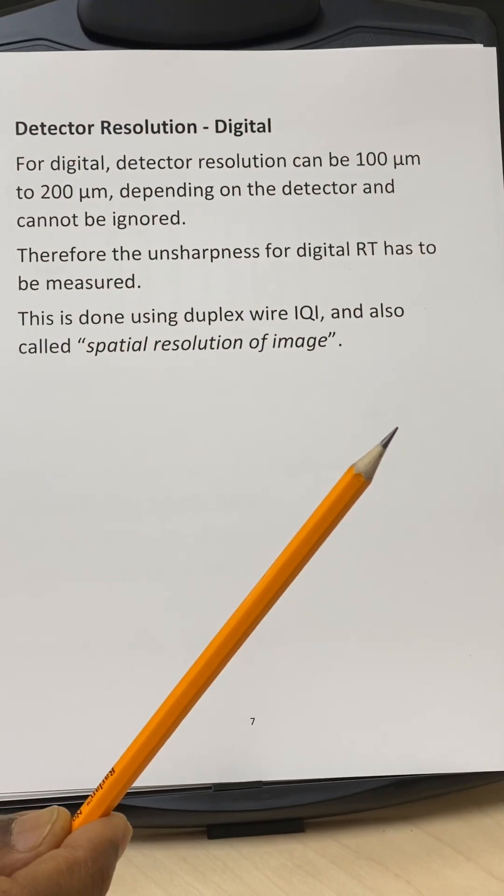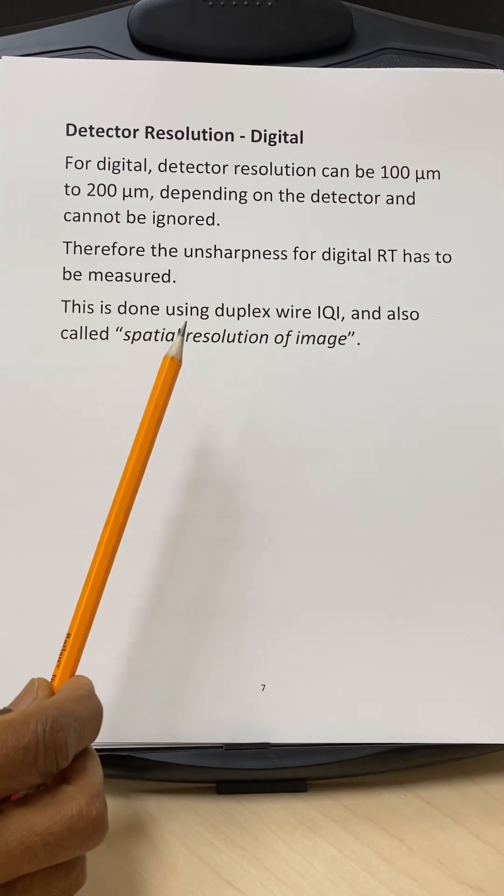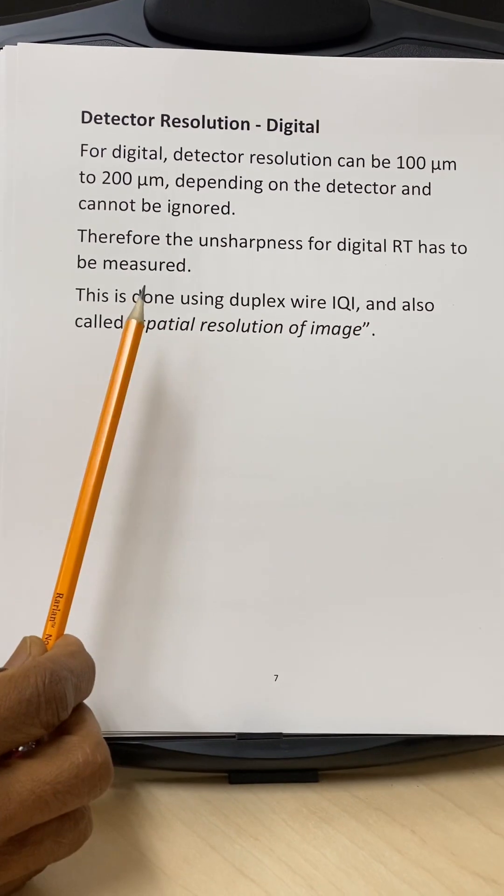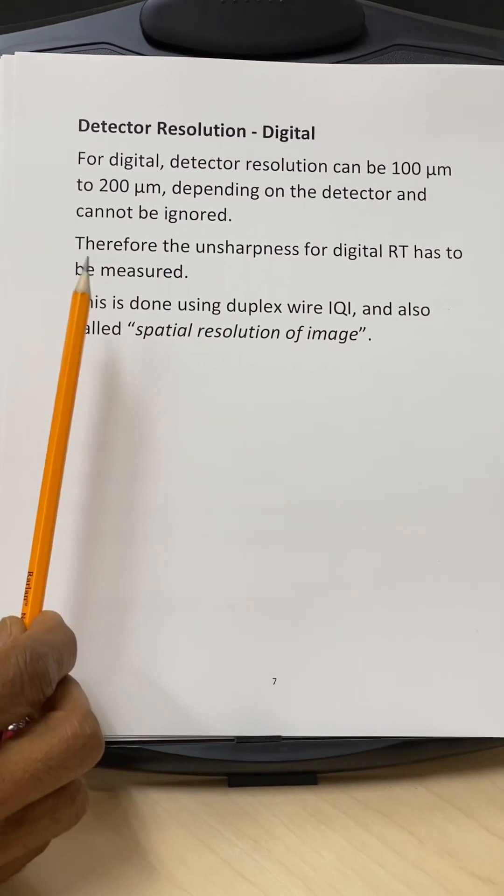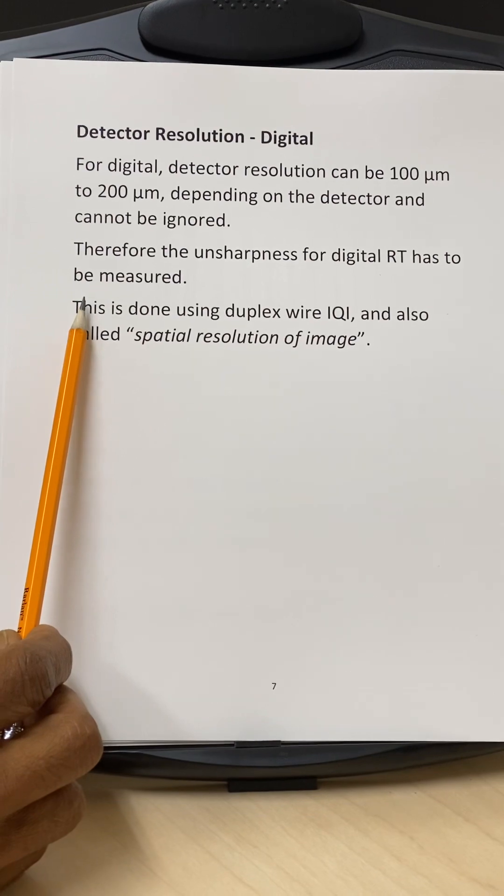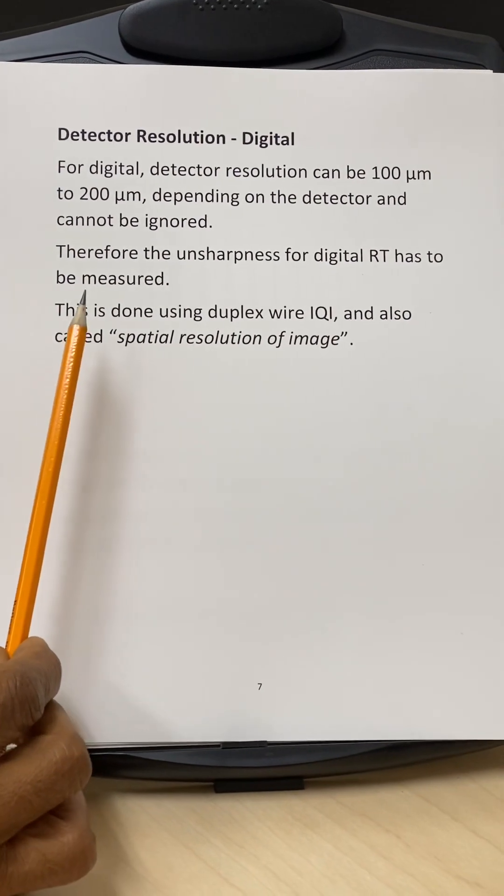However, for digital, the resolution of the detector is not two to five and it cannot be ignored. It's more like 100 microns to 200 microns. So really we have to account for the detector resolution to determine the spatial resolution of the image.